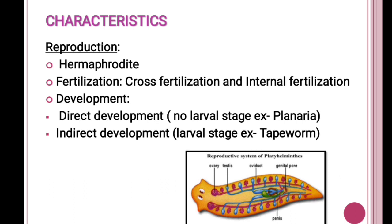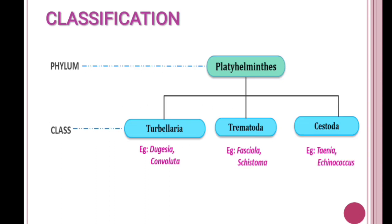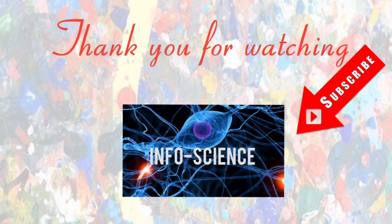Regarding classification, Platyhelminthes is categorized into three classes. The first class is Turbellaria, example Dugesia convuluta. The second class is Trematoda, example Fasciola. The last class is Cestoda, example Taenia and Echinococcus.